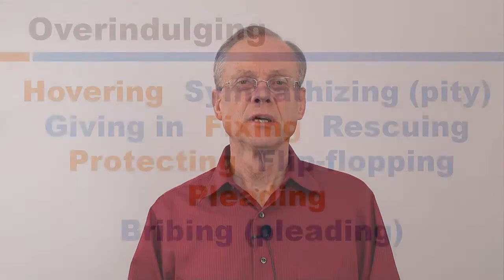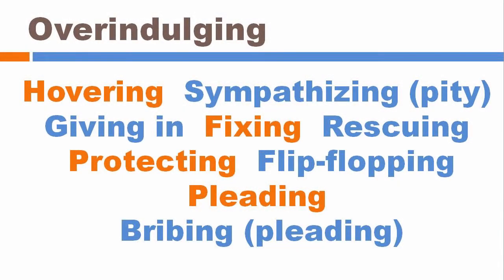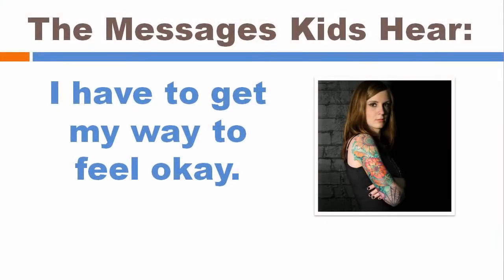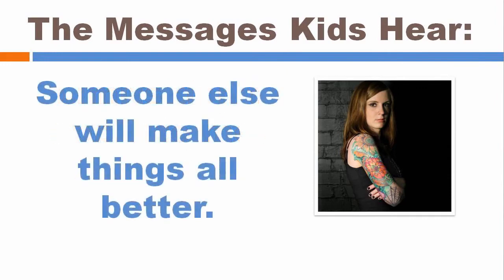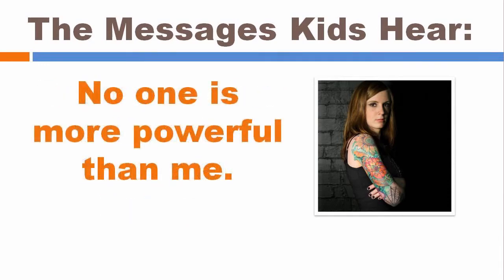The second form of weakening responses to a key moment is over-indulging, which also has many forms: hovering, over-protecting, sympathizing, giving in, rescuing, flip-flopping on decisions, pleading, bribing. When we over-indulge, we give our children too much power or we reward their bad behavior rather than letting them face the consequences and learn responsibility. We're trying to keep them happy, so we end up giving away our own parental authority. And children get messages like: 'I have to get my way in order to feel okay,' or 'limits don't apply to me,' or 'someone else will make things better,' or 'nobody is more powerful than me.'